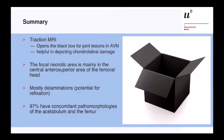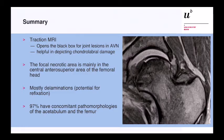In summary, traction MRI is really helpful and opens the black box for joint lesions in AVN. It is helpful in depicting chondrolabral damage. The main focal necrotic area is typically in the central anterior superior area of the femoral head, and we see most of the delamination of the cartilage there, with some potential for refixation available. In 97% of cases, we find concomitant pathomorphologies of the acetabulum and femur that must also be addressed. Thank you very much for your attention.